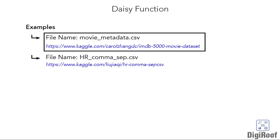All this explanation was done to familiarize you with the daisy function. Inside R, you simply have to type a few lines of code to get the distance between each row in your data. We will demonstrate the use of the daisy function with the help of two examples. Both datasets have a mix of variables including numeric, binary, and nominal columns, making them an ideal choice for displaying the use of the daisy function. First, we will apply this function on the IMDB dataset that has details of 5,043 movies listed on the IMDB portal. You can download this file from the following location.